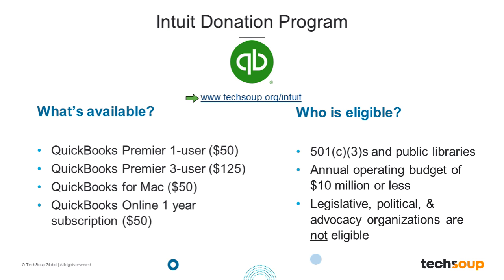For example, if you have an office manager that enters receipts and you need to coordinate with an accountant to do your 990s, or a board member who enters data, you would need the 3-user license. We also have QuickBooks for Mac and a QuickBooks Online subscription — either a new subscription or a renewal. Eligibility is for 501(c) nonprofits and public libraries with operating budgets of $10 million or less. Legislative, political, or advocacy organizations are unfortunately not eligible for this donation program.